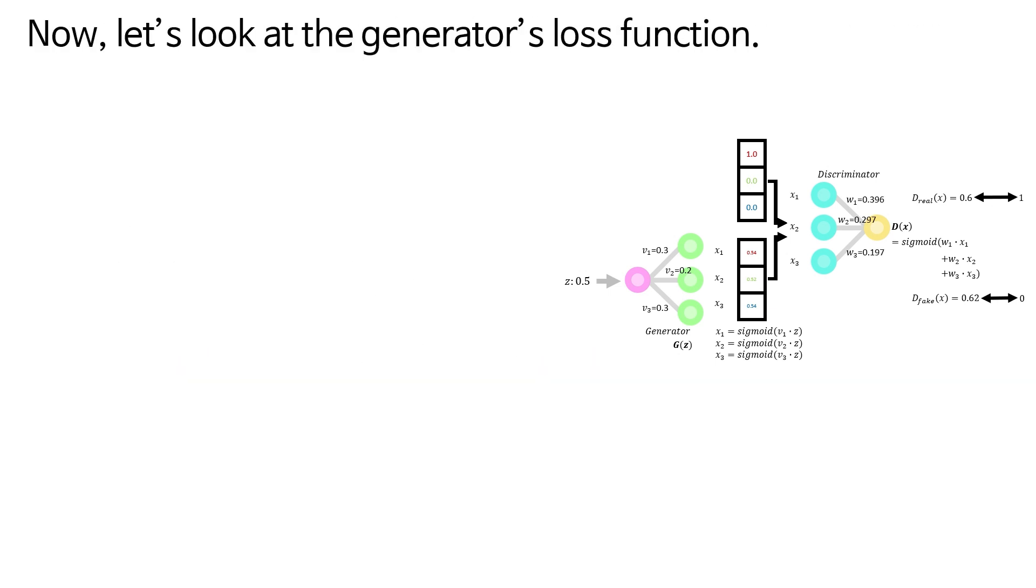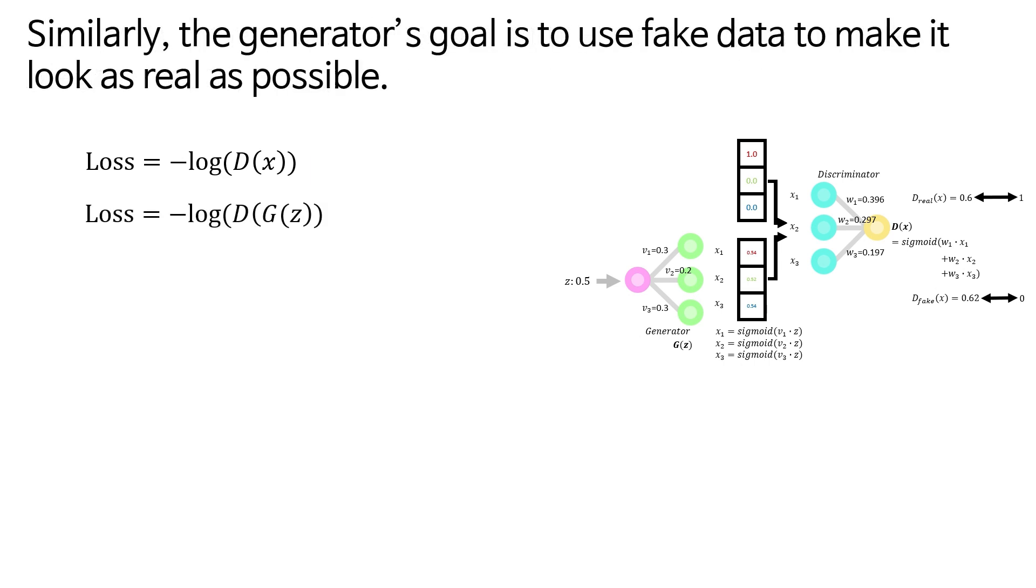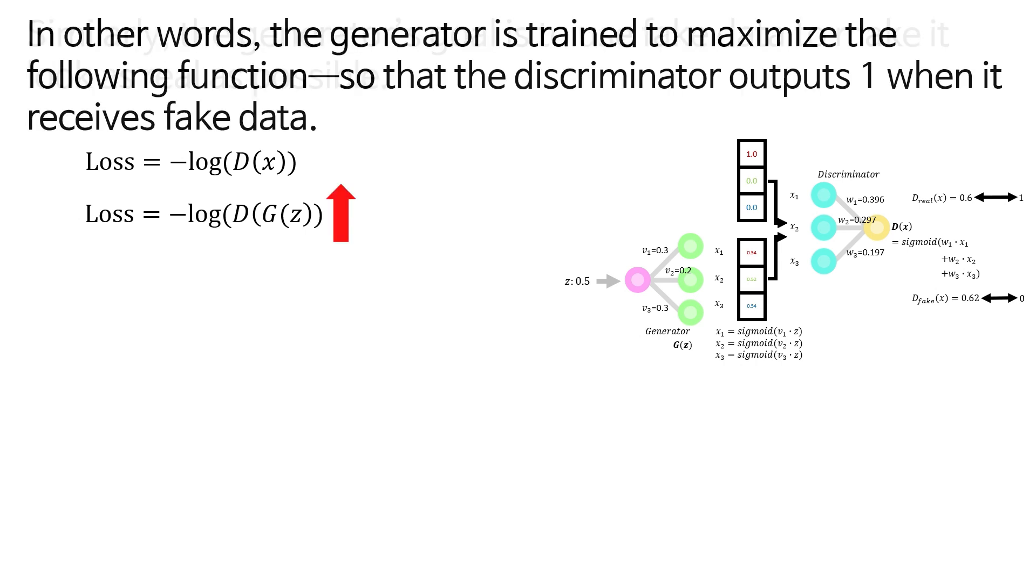Now let's look at the generator's loss function. Earlier, we mentioned that when real data is input to the discriminator, the goal is to maximize log of D(x). Similarly, the generator's goal is to use fake data to make it look as real as possible. In other words, the generator is trained to maximize the following function, so that the discriminator outputs 1 when it receives fake data.